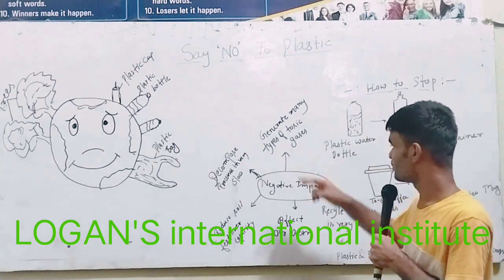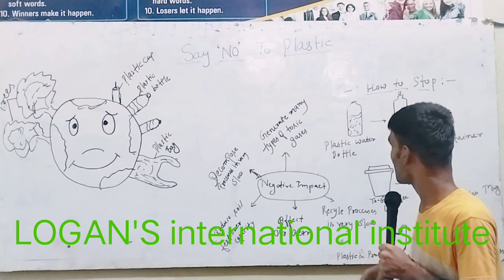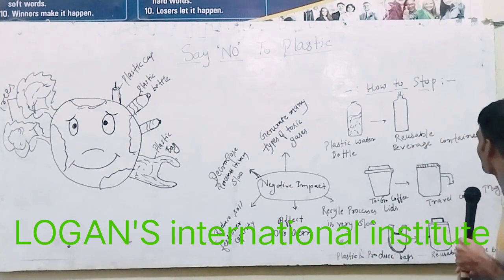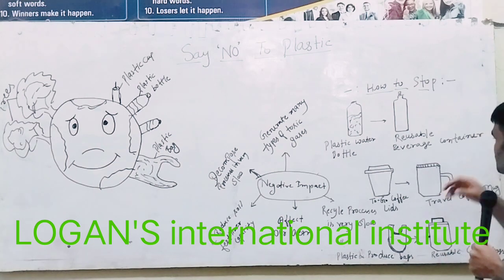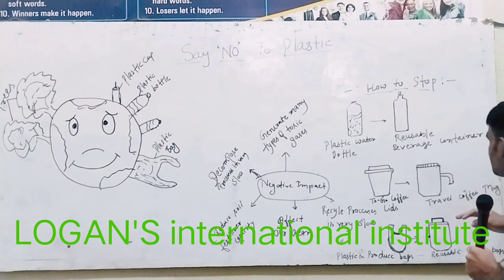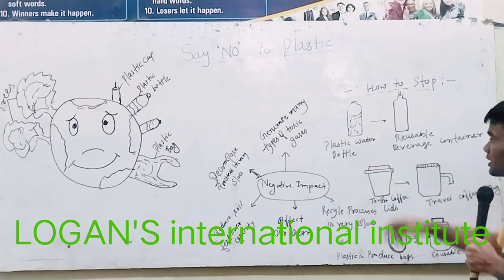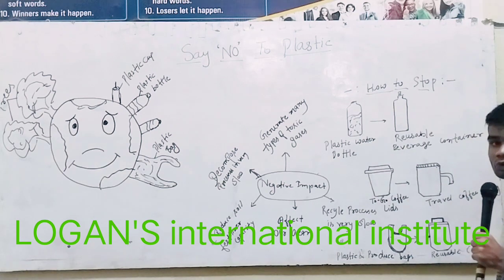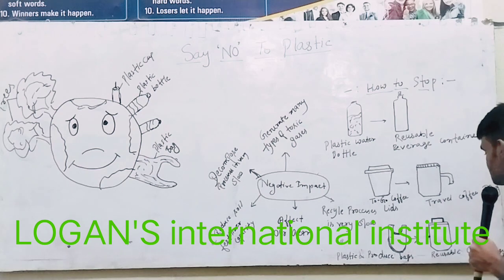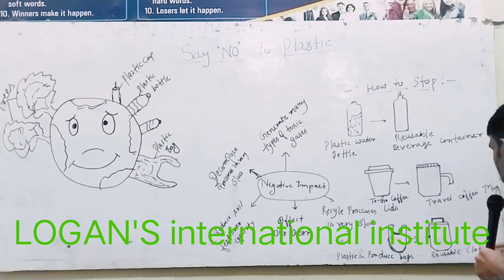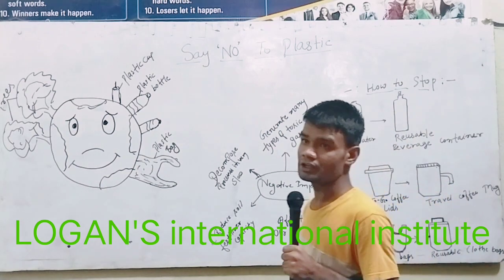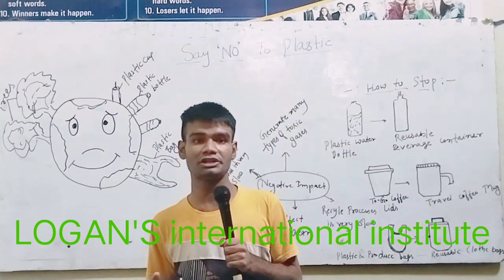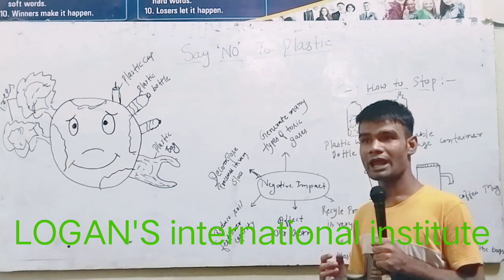So how do we stop single-use plastic? We can use reusable beverage containers in place of plastic water bottles. We can use a travel coffee mug in place of coffee lids. We can use reusable cloth bags in place of plastic bags.